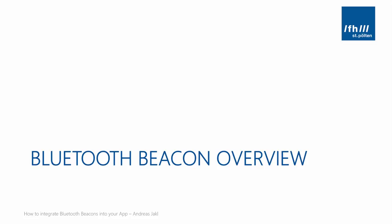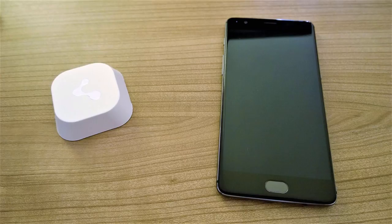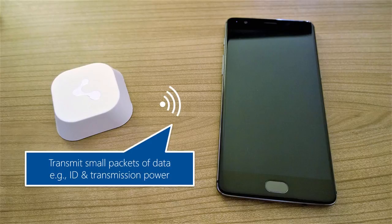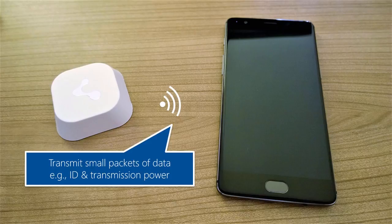Let's start with an overview of Bluetooth beacons — what they are and what you can do with them. On the right side you can see my phone, and on the left side one of the Bluetooth beacons, in this case from contact.io. This Bluetooth beacon always transmits small packets of data, for example the ID. Every Bluetooth beacon should have a unique ID, and it can also transmit the transmission power or other information. You can imagine a Bluetooth beacon to be like a lighthouse in the sea, which always sends out information to say 'I'm here', and if a phone comes close, it can get the data and do something with it.